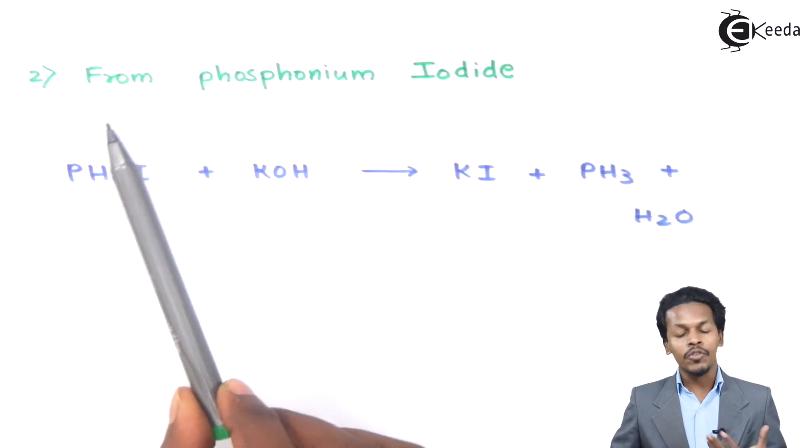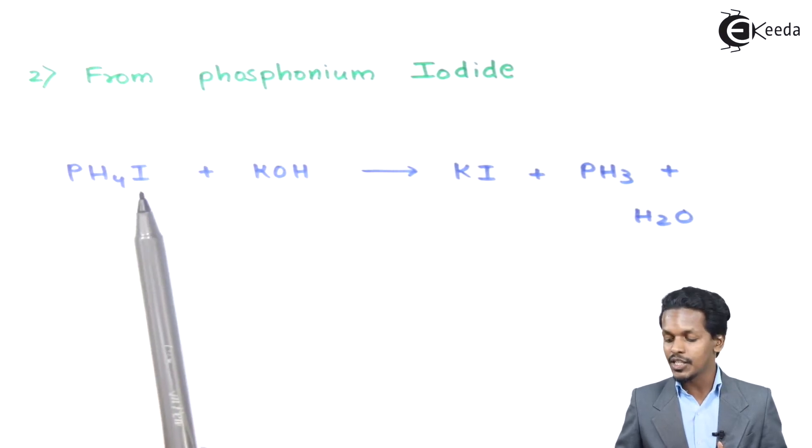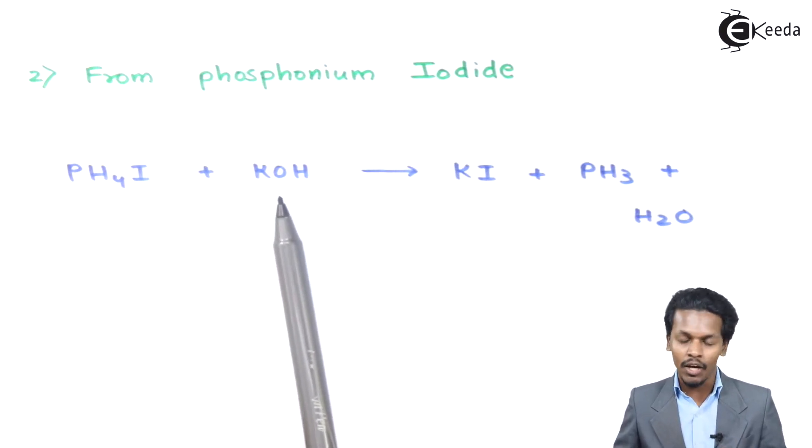Another method is we can prepare phosphine from phosphonium iodide. This is phosphonium iodide, PH4I, and whenever it has been reacted with a base like KOH.